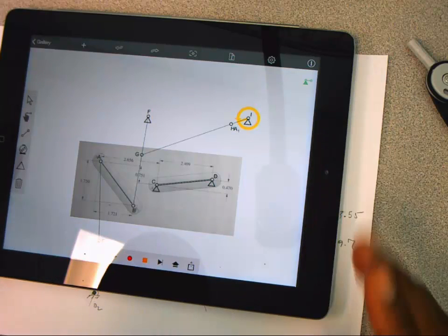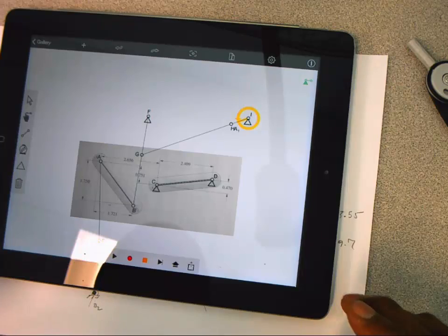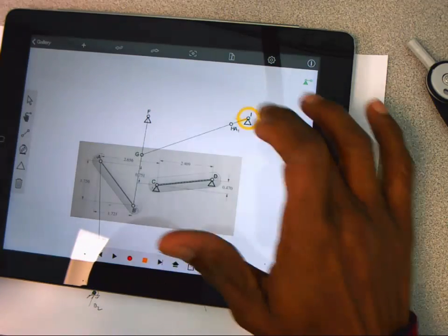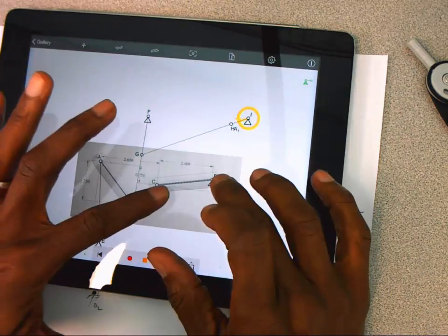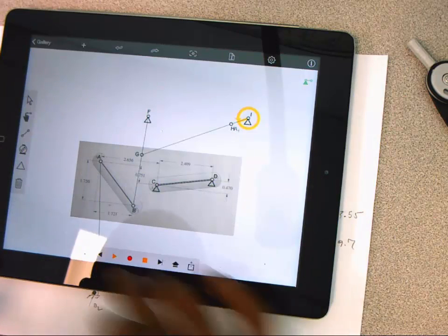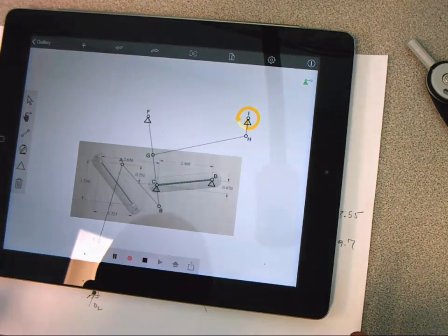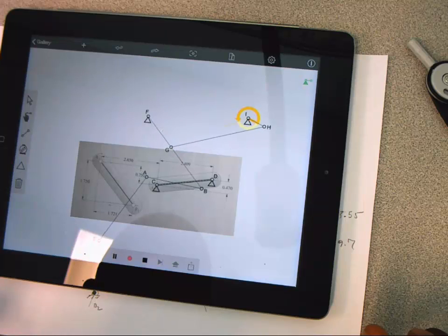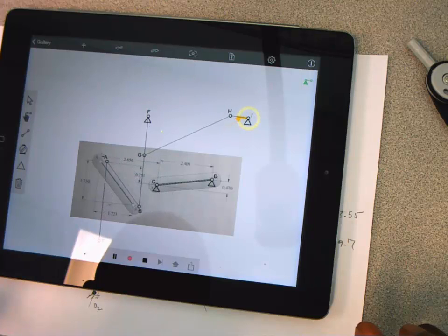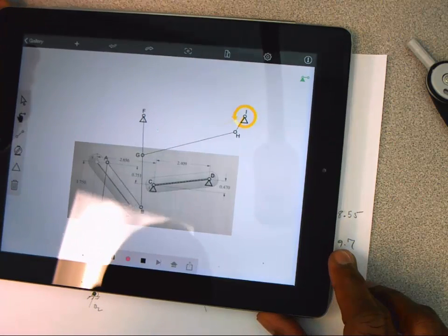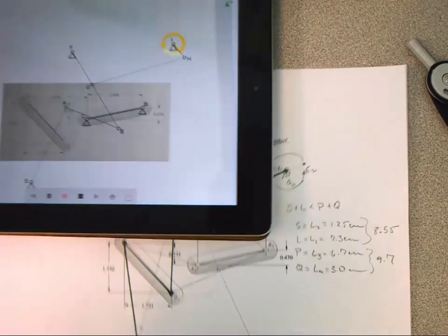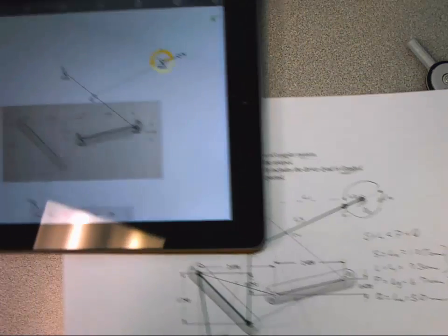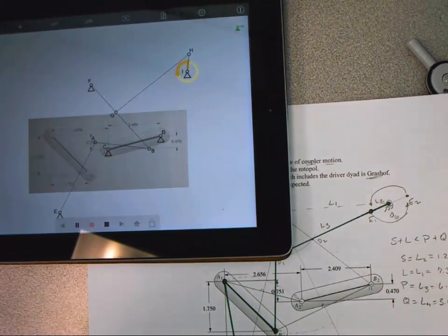And here we see kind of the same problem. I've taken a picture of it, brought it into the application. And here we have our crank, and as it moves, it's going to pull that coupler over and then push it back. And so we can see the coupler comes over, lines up on A2, B2, and now it's pushing it back to its start position. And it's bounded, goes back and forth, so that driver dyad is a great location for adding a motor.